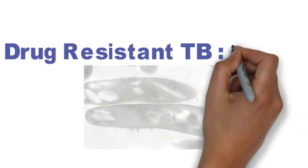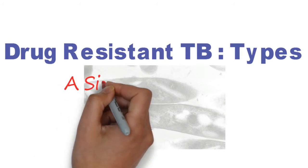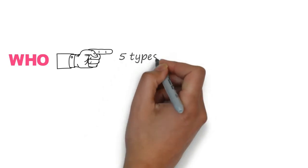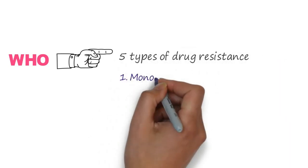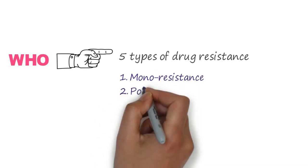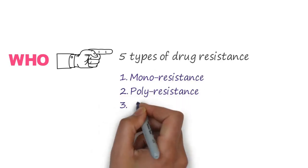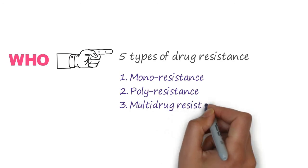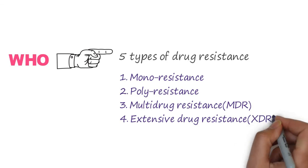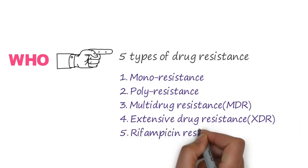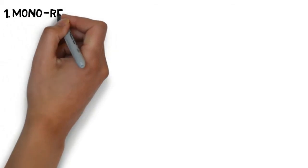In this video we'll learn about the types of drug resistance TB. WHO has classified drug resistance into five types: first is mono resistance, second is poly resistance, third is multi drug resistance, fourth is extensive drug resistance, and fifth is rifampicin resistance.